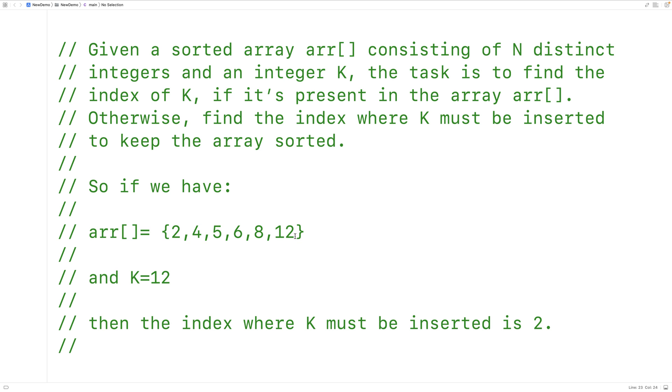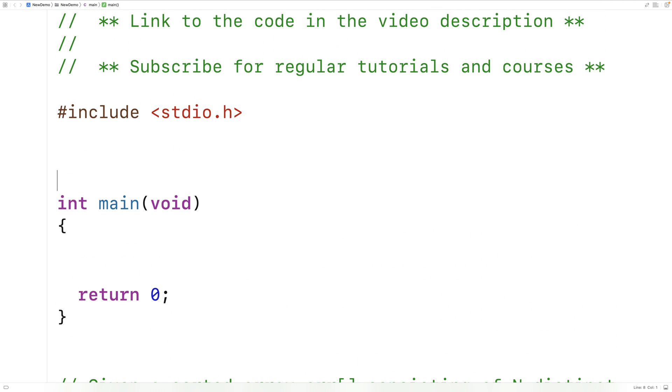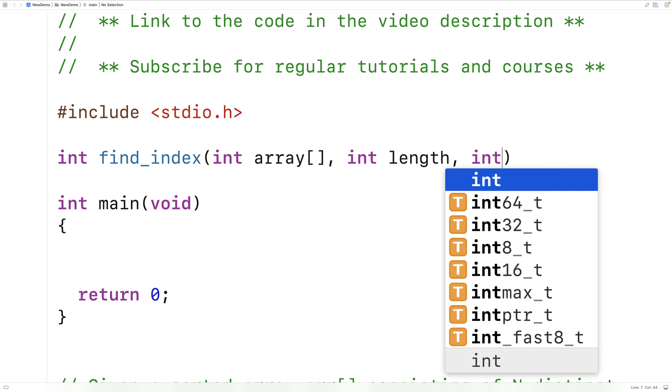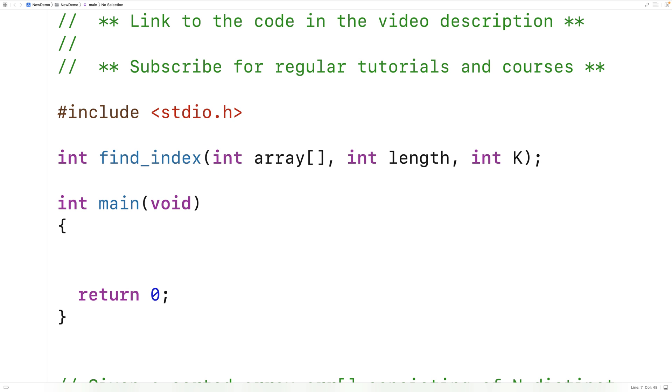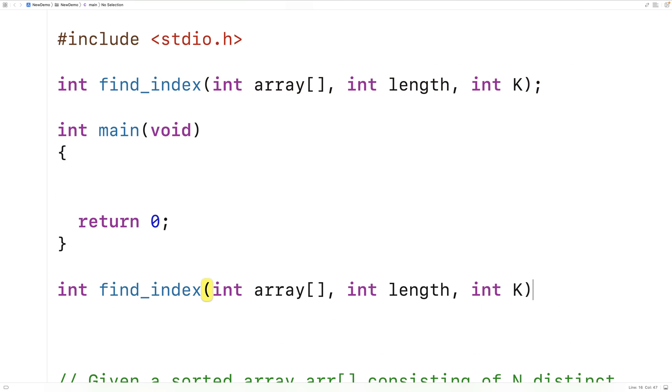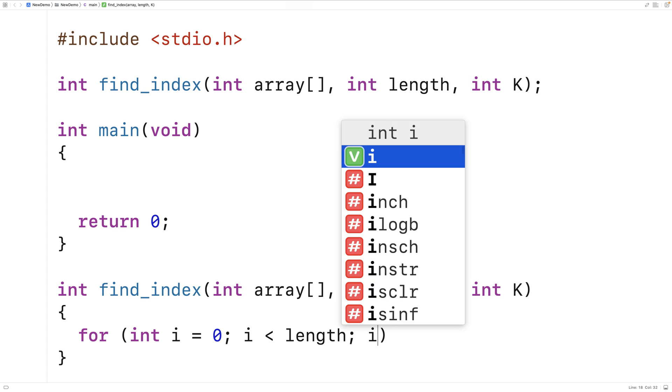So let's actually try to solve this problem now in C. We'll make a function to find this index. And the function is going to accept as arguments the array itself, the length of the array, as well as K. And it's going to find this index we're looking for, where either K is or where K belongs in the sorted array. Then we'll provide a definition of the function down here. And it actually won't take too much code to solve this problem, because what we're going to do is make a loop. We'll say for int i is equal to 0, i is less than the length of the array, i++.